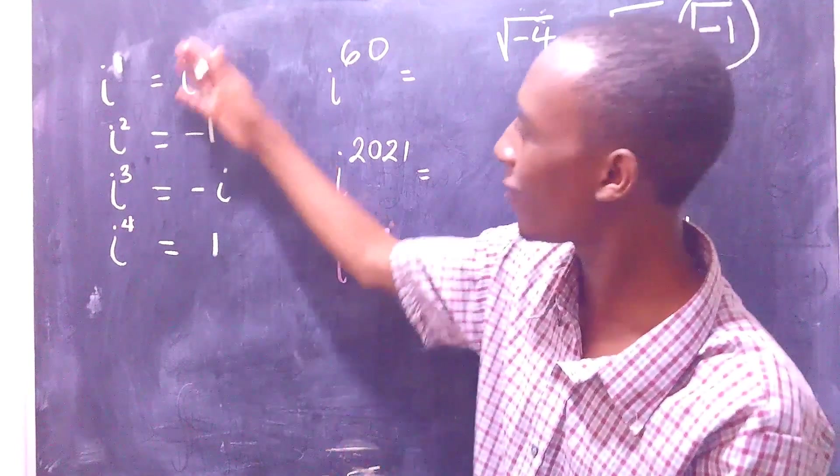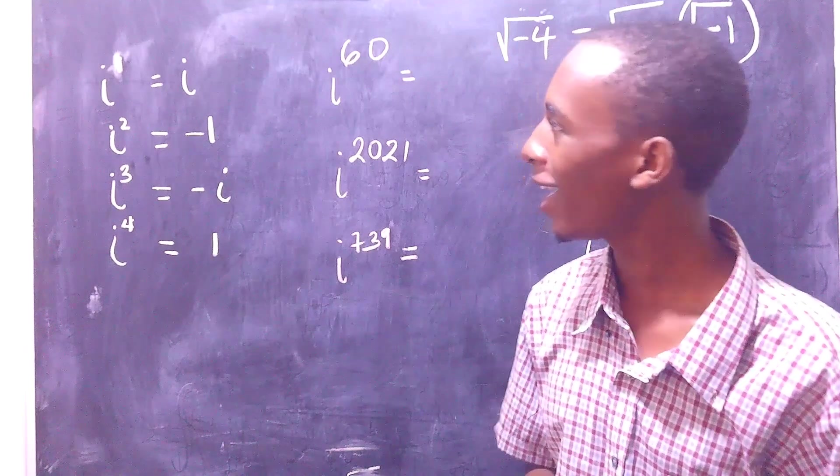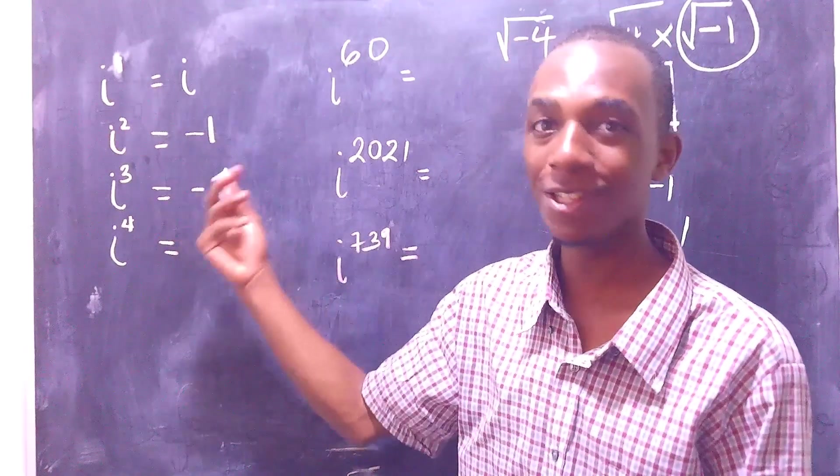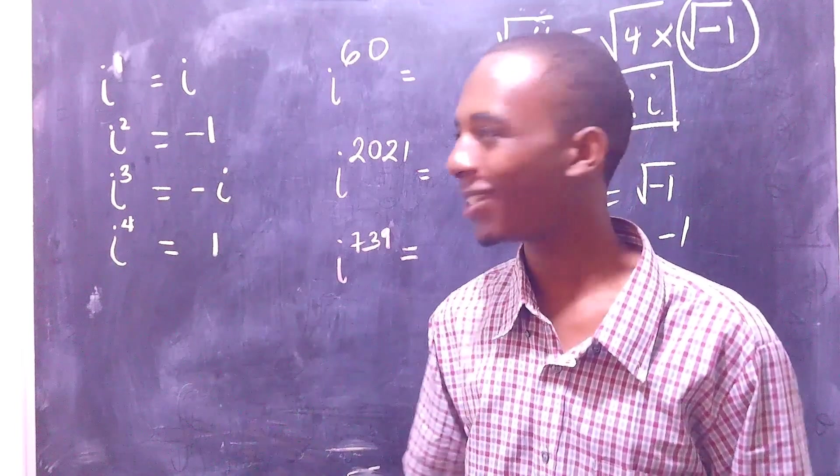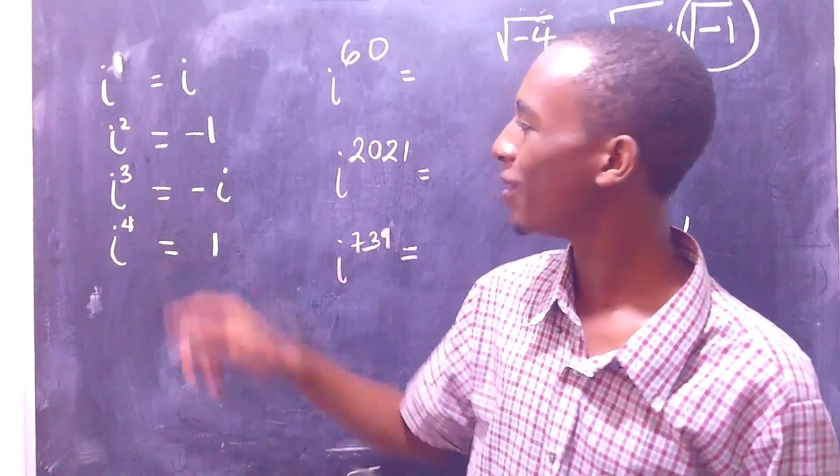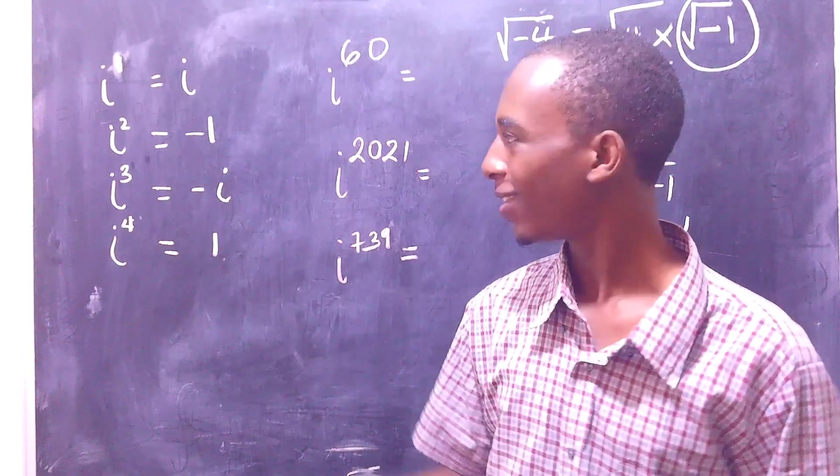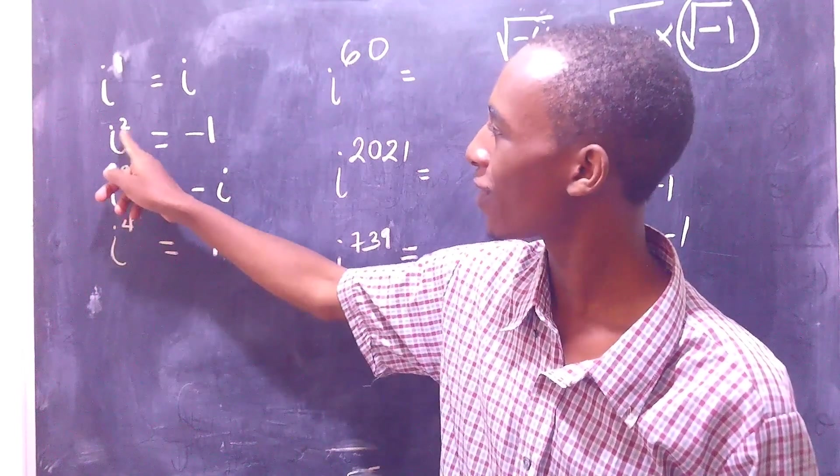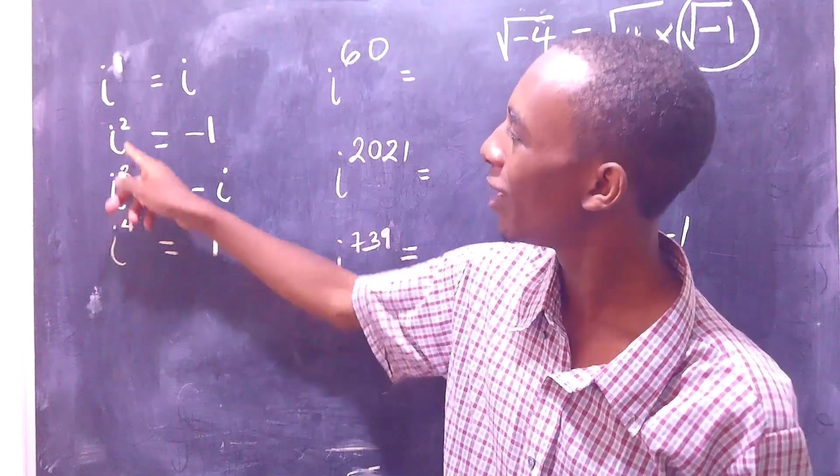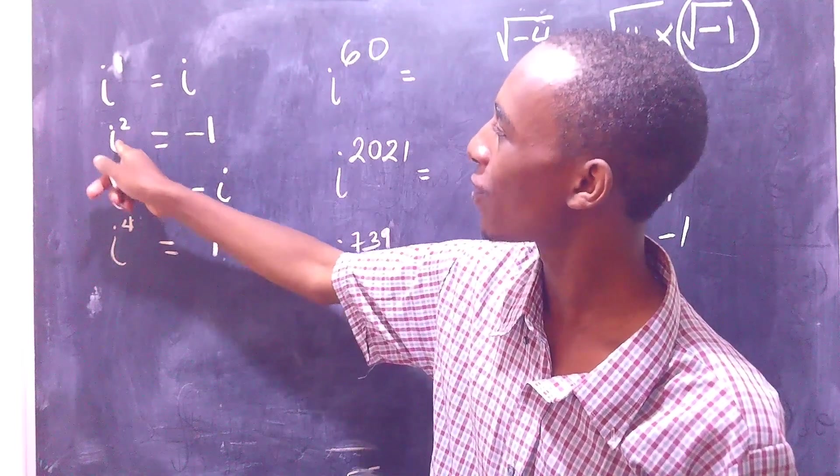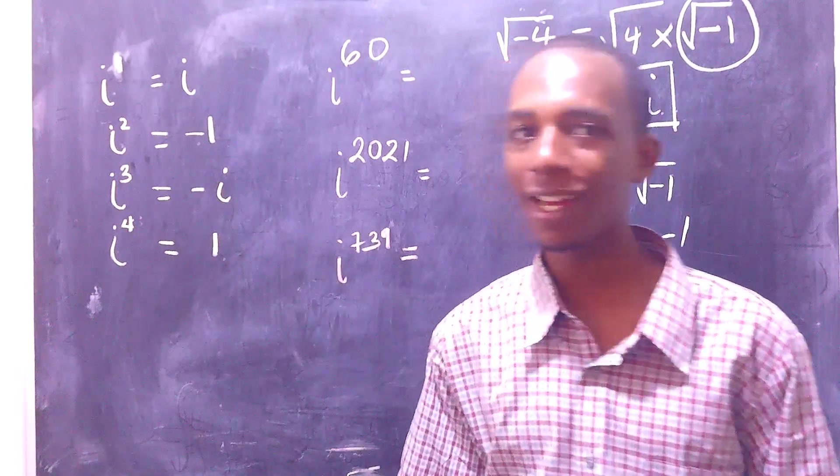And from this you can find some of the lower powers of i. For example, i to the power 1 is i, i squared is negative 1 by definition, i cubed is negative i, i to the power 4 is 1 because i to the power 4 is just i squared squared, that's negative 1 squared. i cubed is just i squared times i to the power 1, so that's negative 1 times i.